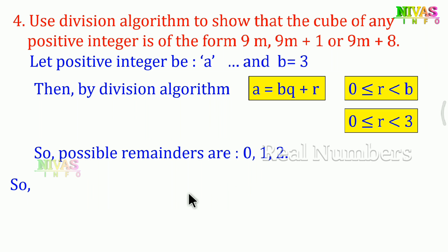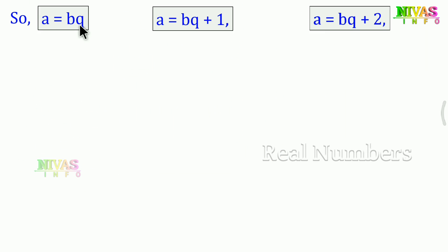So we write three equations: a = bq + 0, a = bq + 1, and a = bq + 2. We'll prove each case to get 9m, 9m+1, and 9m+8. First, when a = bq, and b=3, we get a = 3q.